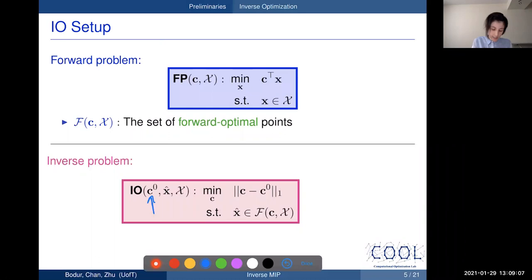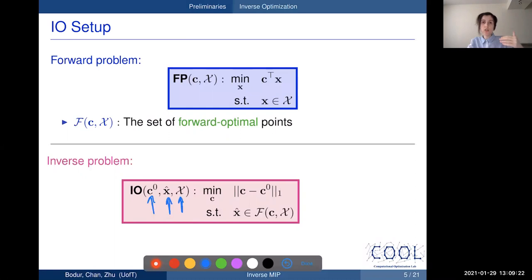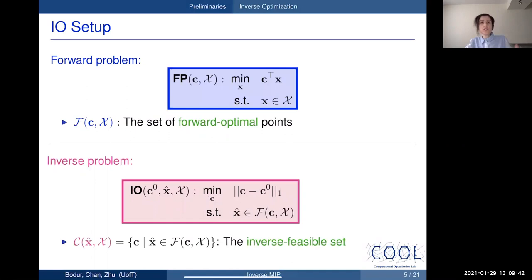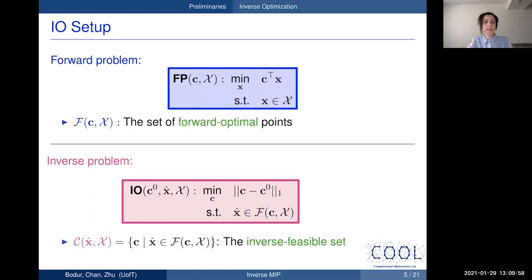Our inputs are: a prior guess of the objective function c-naught, a candidate solution x-hat that we want to render optimal, and the feasible set of our forward MIP. The goal in IO is to find an objective vector c that minimizes the distance from the reference point c-naught — using any norm, with L1 as an example — such that the candidate vector c makes our given solution x-hat a forward optimal one.